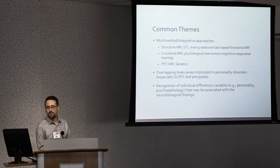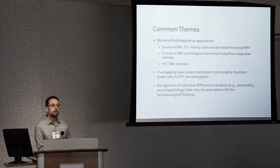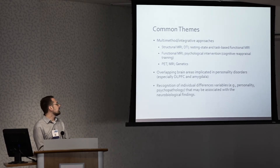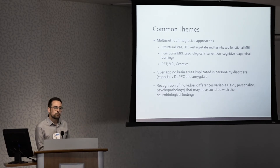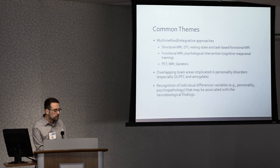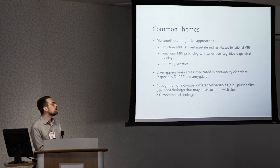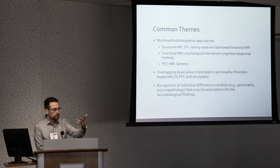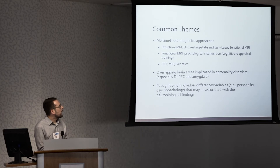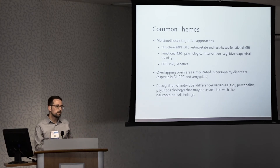I also want to highlight that we're seeing, and others might disagree with me, some degree of overlap across brain regions that tend to be implicated in these different personality disorders. In particular, I'd like to highlight the dorsolateral prefrontal cortex — it came up in everybody's presentation as being relevant in some respect. I think it's important to consider the role of that region, especially when it comes to self-regulation and the top-down control of emotion, and what this might mean for the boundaries that separate these different disorders.